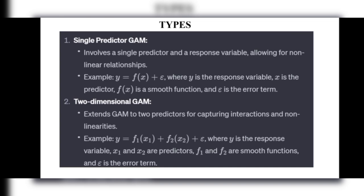There are several types of GAM. The first type is the Single Predictor GAM, which involves a single predictor and a response variable, allowing for non-linear relationships. The example formula is: y = f(x) + ε, where y is the response variable, x is the predictor, f(x) is a smooth function, and ε is the error term.